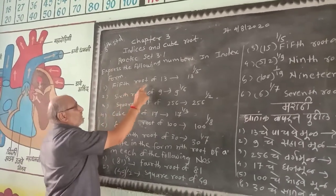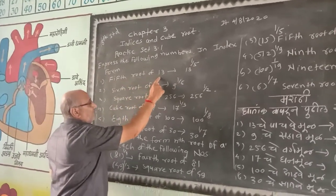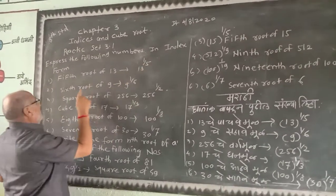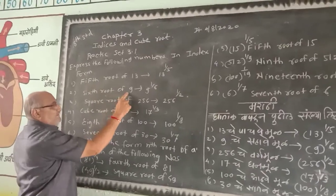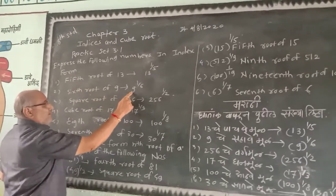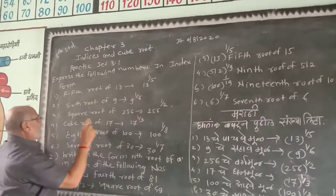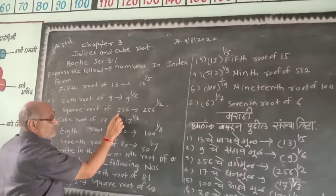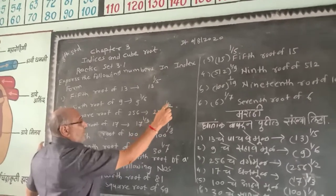Fifth roots of 1.3. Sixth root of 9. Square root of 256.